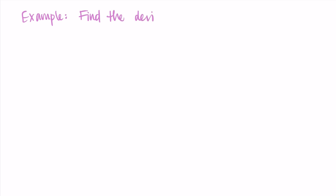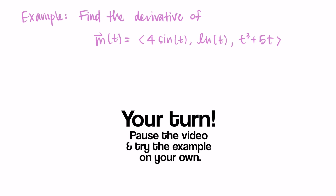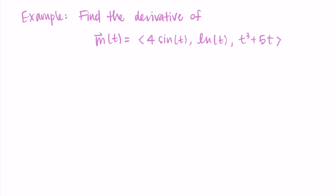Let me show some examples — this should also get your brain going on derivatives if it's been a while. I'll assume you're fluent in derivatives, but if you need a little more practice, don't worry. For example, let's find the derivative of the vector m(t) = <4sin(t), ln(t), t³ + 5t>. Pause and try this on your own — remember, we're just taking the derivatives of each component.